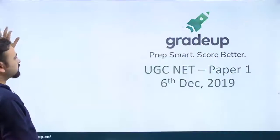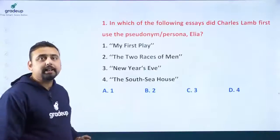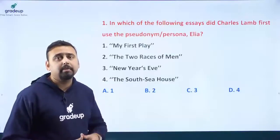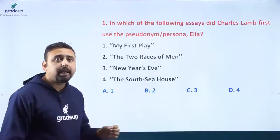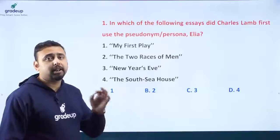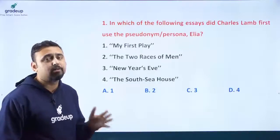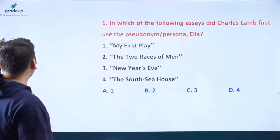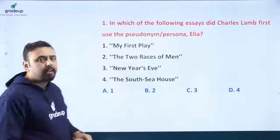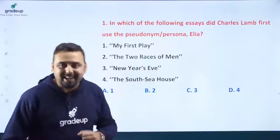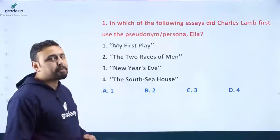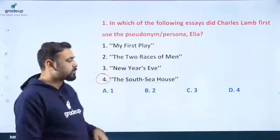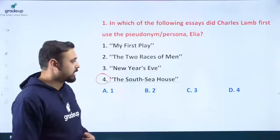Now, as far as the first question is concerned, in which of the following essays did Charles Lamb first use the pseudonym or persona 'Elia'? Options: 'My First Play,' 'The Two Races of Men,' 'New Year's Eve,' or 'The South Sea House.' The correct answer is option 4, 'The South Sea House.'